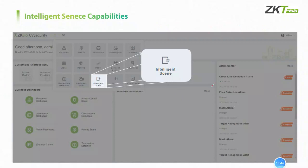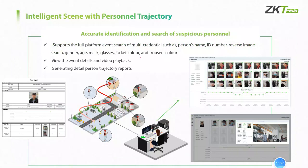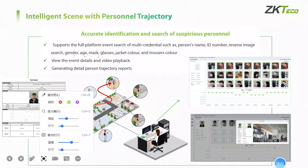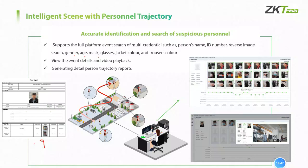Next is the intelligent scene module. Let's see what highlight functions intelligent scene has. Target search in intelligent scene is more powerful than the target search of intelligent video — it can search target records across the whole platform. Not only the access control module, but also events generated by the same person in the parking module. Finally, it can draw the trajectory of this person. It can be searched by many characteristics like gender, age, mask, hair color, and more. A personal track report will also be generated.